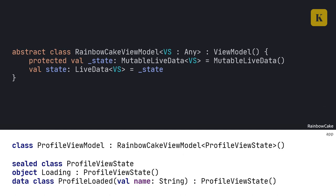We provide this type on the client side as well. Most of the time with single view states, we're either going to use data classes or sealed classes for that one view state, or a combination of the two. For the sake of these slides, I'm using a sealed class with just two simple cases: a loading state implemented as an object because it doesn't need to hold any values, and a profile loaded state implemented as a data class because it will contain a name to be displayed on the UI. For more about designing view states like this, please see the resources at the end.